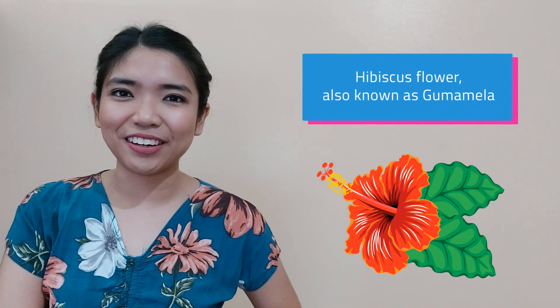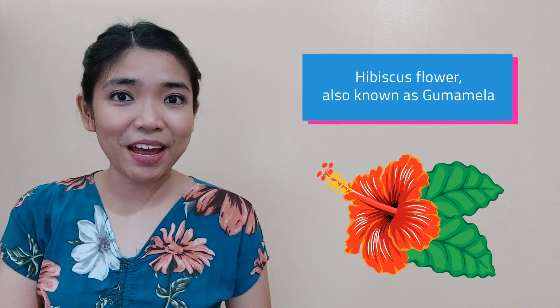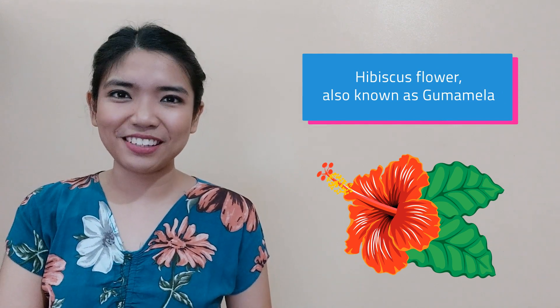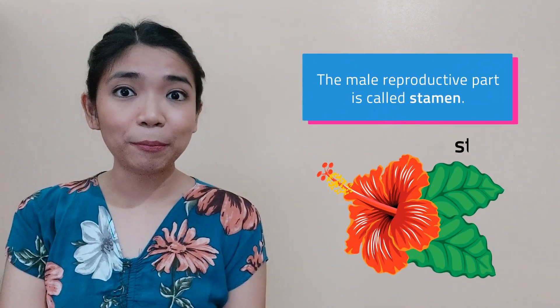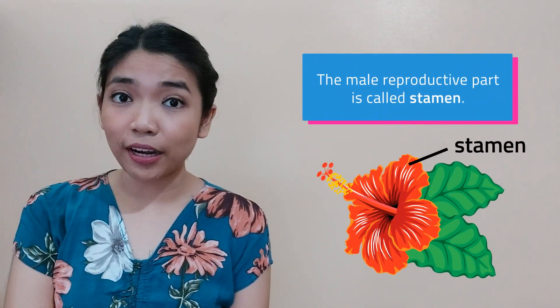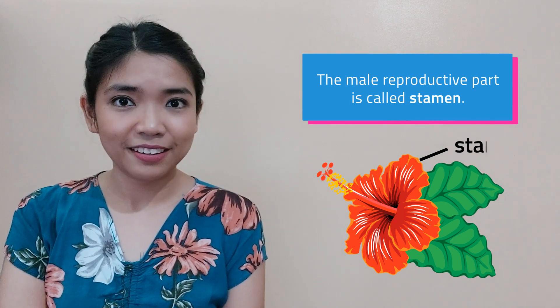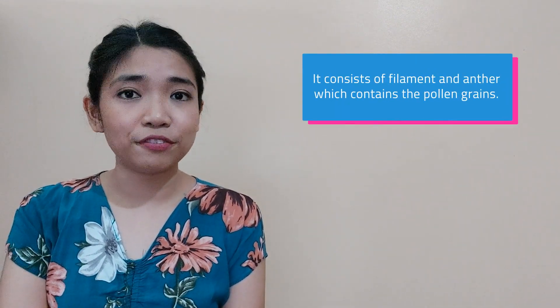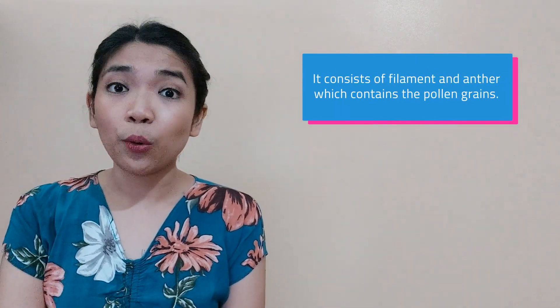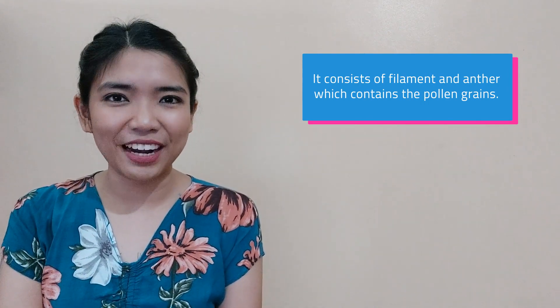Look at this hibiscus flower, also known as gumamela, here in the Philippines. Through this, we will get to see and differentiate the male and female reproductive parts of a plant. The male reproductive part is called stamen. It consists of filament and anther, which contains the pollen grains.